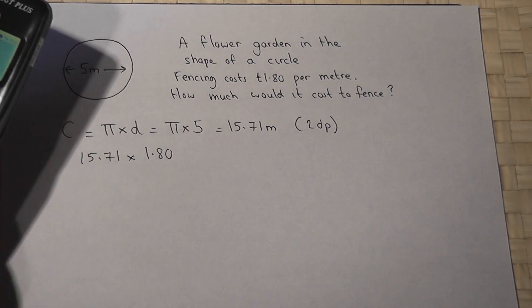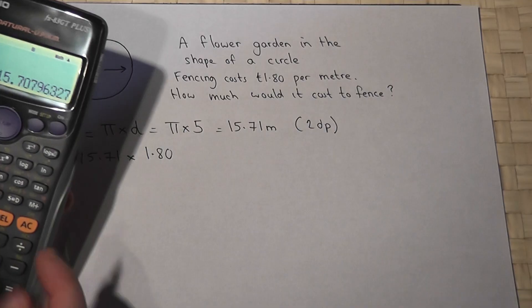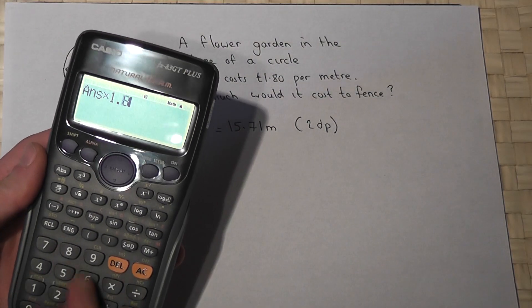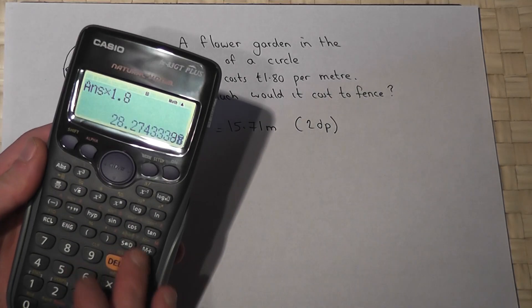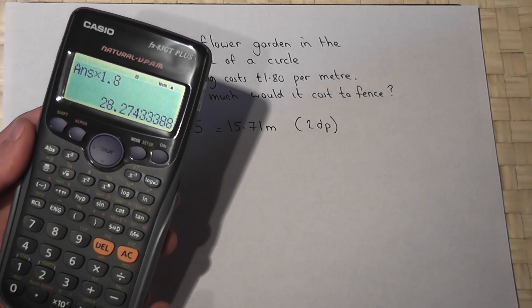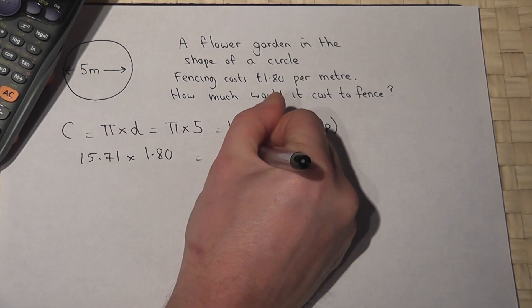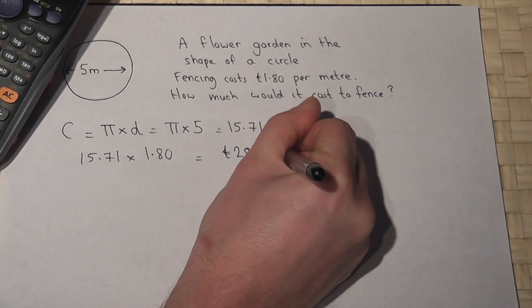now the thing here is to use the accurate number from your calculator, the 15.707, times this by the 1.8, and this works out at 28.27. So the cost is £28.27.